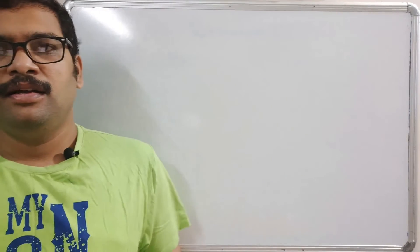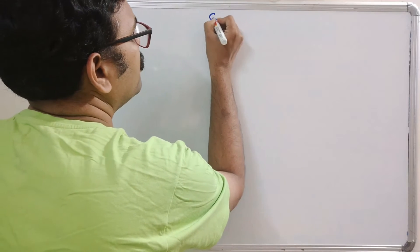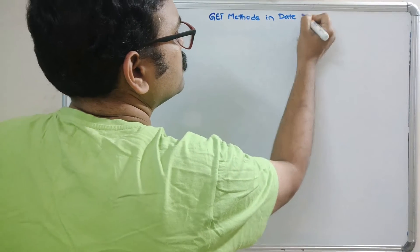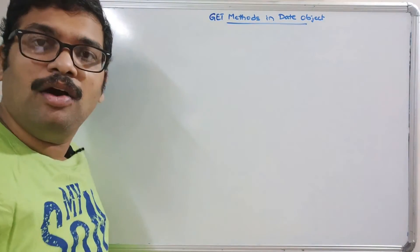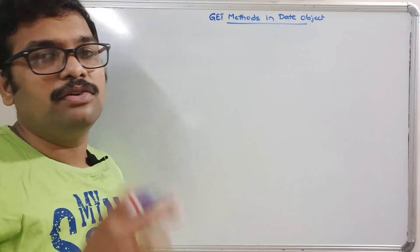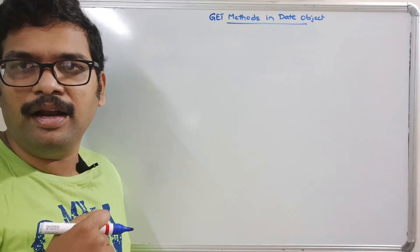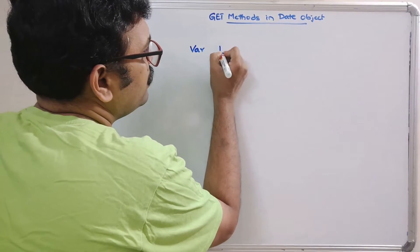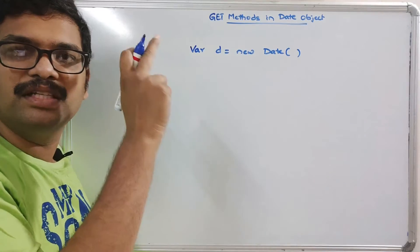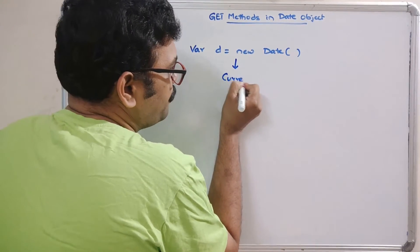Hello friends, welcome back to our channel. In today's session we will see the get methods in the date object. In the previous session we saw how to create the date object. An object should be created with the help of the new keyword. We can create a date object like: d = new Date(). If you don't pass any parameters inside the date function, it will give the current date and time.